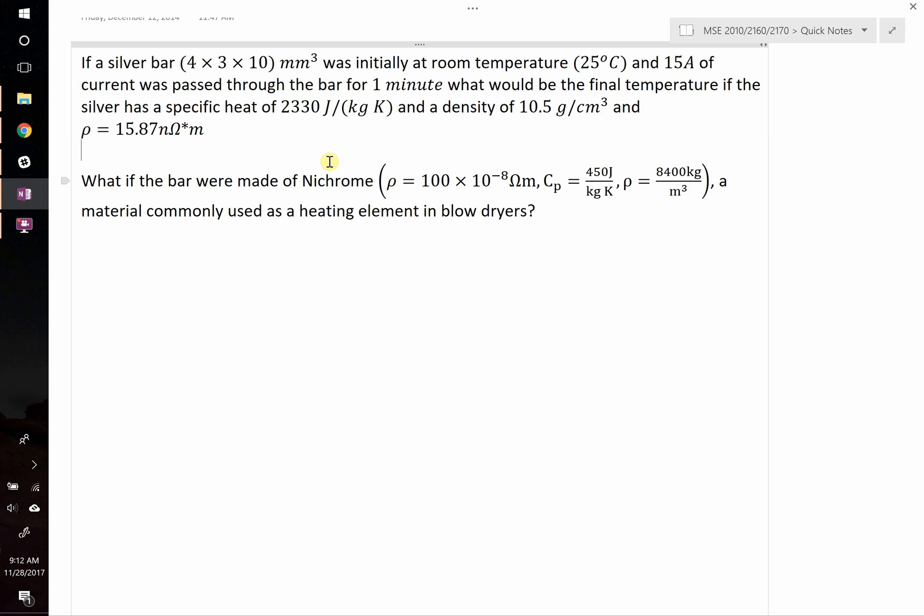So on a question like this, we know the initial temperature, we know that passing current through it will generate heat, we want to figure out how much heat is generated, and then how much temperature change that heat is going to translate to, assuming it all goes into the material and isn't radiated away.